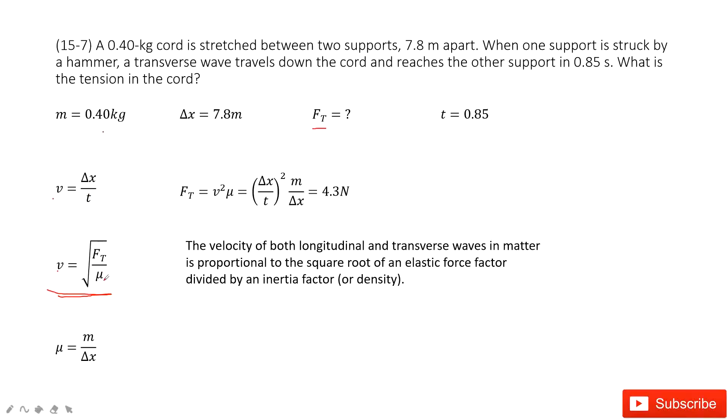Next question, we need to find μ. The μ tells us the density for this chord, the linear density, just the mass divided by delta x. So mass divided by delta x. Now the μ is solved.